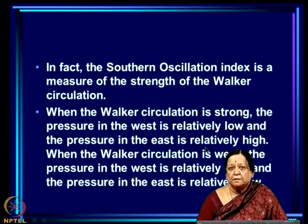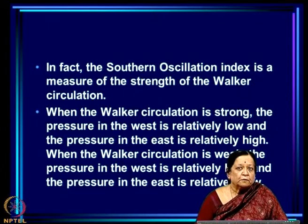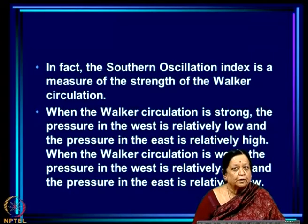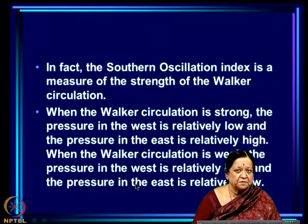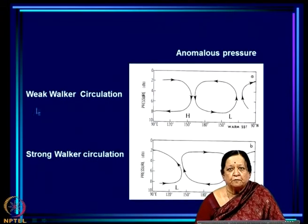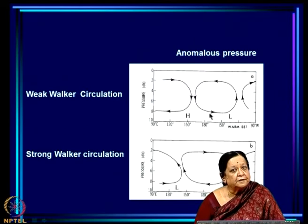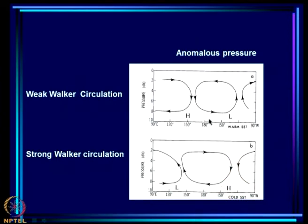The Southern Oscillation Index is defined as the difference of Tahiti and Darwin sea level pressure anomalies — a robust measure of what Walker called the Southern Oscillation. The SOI is a measure of the strength of the Walker Circulation. When the Walker Circulation is strong, pressure in the west is relatively low and in the east relatively high. When the Walker Circulation is weak, pressure in the west is relatively high and in the east relatively low — the actual pressure gradient weakens. In the strong case the rising limb of the TCZ is located right over the west Pacific with the sinking limb in the east.